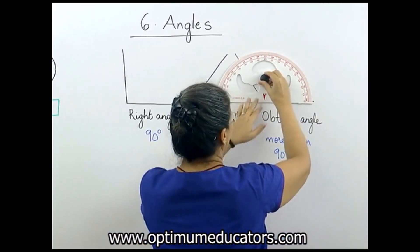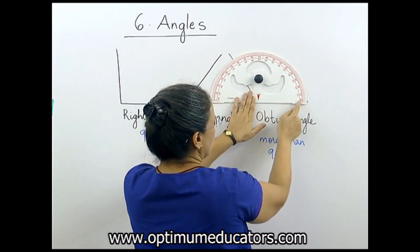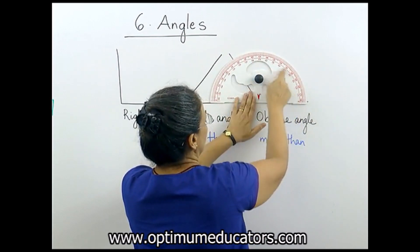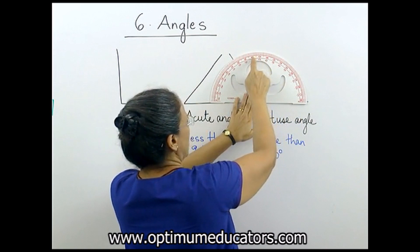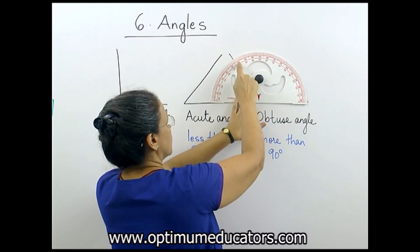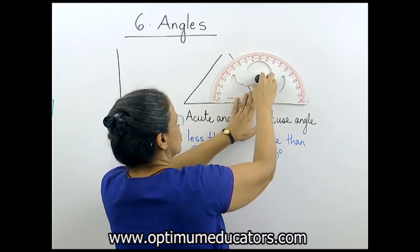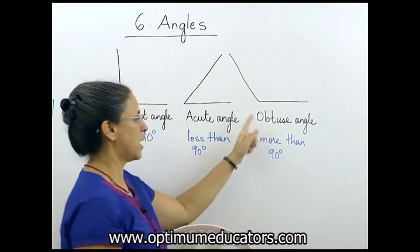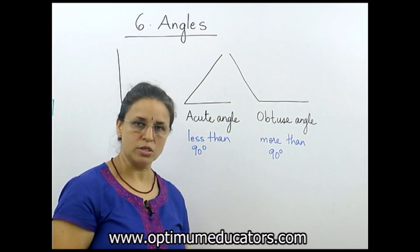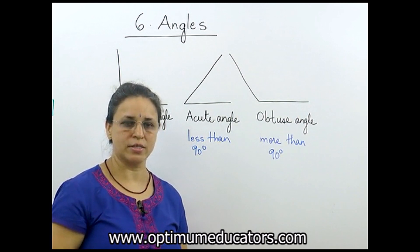Now let us measure this. Actually, just by looking you can make out. From here when we measure, we have already come to 90, 100, 110, 120, 125. So we know that this is an obtuse angle because it measures more than 90 degrees.